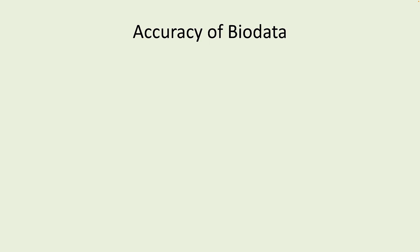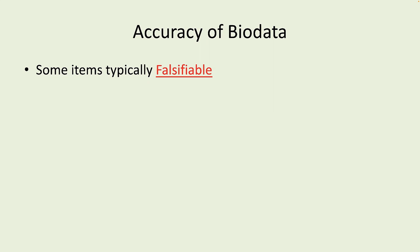Bio data is not without its problems. Some items are typically falsifiable. People will inflate their college grades, lie about the types of jobs they've held, past salaries received, past employers, educational degrees earned, and gaps in employment histories. All one needs to do to verify a college degree is call the college registrar with the person's name, degree, and year that they earned it, and in two minutes that fact is checked. If you have an undergraduate degree in business, make sure that you know it's a BBA, BS, or BA.